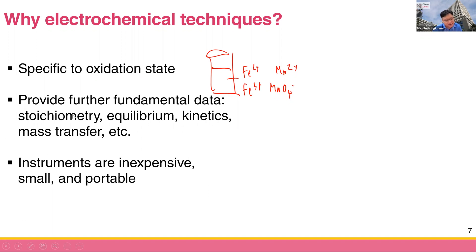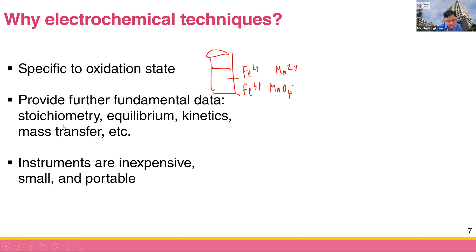The second advantage is that electrochemistry also provides fundamental data, such as stoichiometry of the electrochemical reaction, equilibrium data like electrode potential — which we will discuss today — how fast electrochemical reactions can occur, and mass transfer. You may recall the Van Deemter equation from chromatography for mass transfer; we can study analogous mass transfer phenomena in electrochemistry as well.